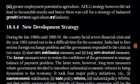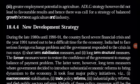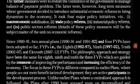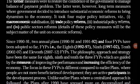During the late 1980s until 1990-91, the country faced several financial crises, and 1991 turned out to be a difficult time for the economy. India had to face serious foreign exchange problems, and the government responded in two ways: short-term stabilization measures and long-term structural measures. The former were to restore confidence to manage the balance of payment problem. The latter involved substantial economic reforms to bring dynamism to the economy. It took four major policy initiatives: macroeconomic stabilization, trade policy reforms, industrial policy reforms, and public sector reforms. Details of these policy measures will be the subject matter of the unit on economic reforms.